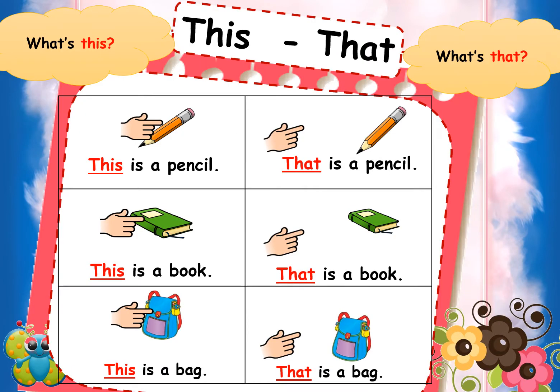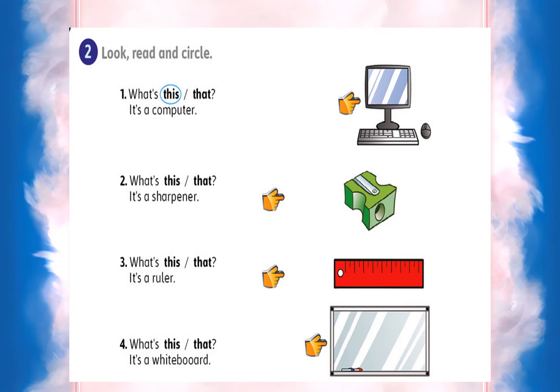Let's look at full examples: 'This is a pencil' — because it is near. 'That is a pencil' — because it is far. 'This is a book' — because it is near. 'That is a book' — because it is far. 'This is a bag' — because it is near. 'That is a bag' — because it is far.